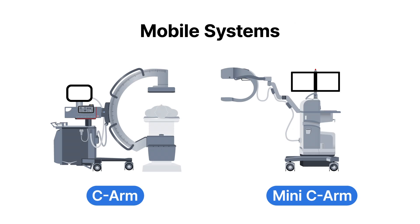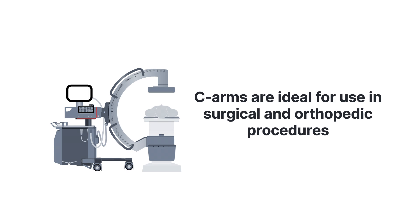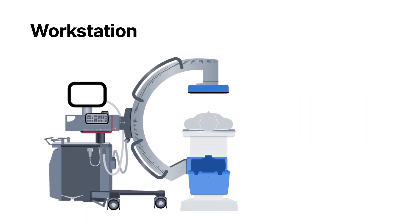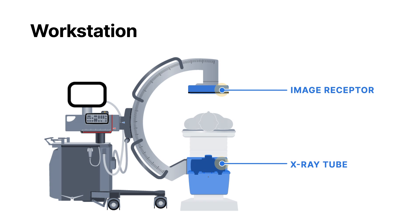Mobile fluoroscopic systems are called C-arms and can be full-size or mini. C-arms are usually found in hospitals or clinics because they're smaller and less expensive than having a full RF room. Because of their mobility, C-arms are ideal for use in surgical and orthopedic procedures. C-arms generally have an x-ray tube, an image intensifier or flat panel detector, and a workstation with a monitor or two.